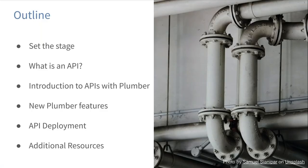To give you an idea of what we're going to do today: first, I want to set the stage with a problem to frame our conversation. Then we'll have a brief discussion about what an API is. We'll talk about getting started using APIs with R and the Plumber package, discuss new features in the latest CRAN version of Plumber, look at different deployment options, and at the end I'll provide links to additional resources.